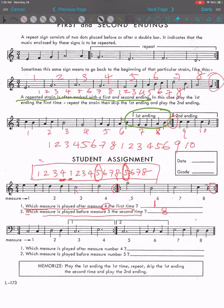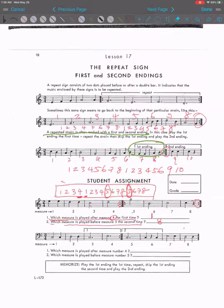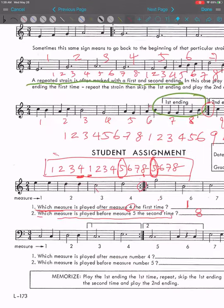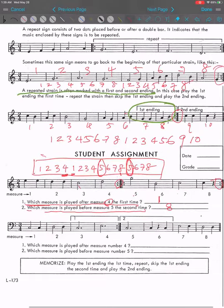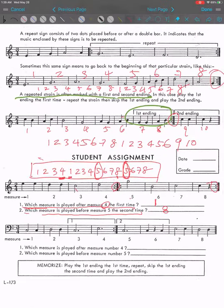Next one. Let's write out the order again for this piece. So it'll be 1, 2, 3, 4, repeat, and then go back to the beginning, 1, 2, and skip to the second ending. So it'll be 5, 6, 7, 8.